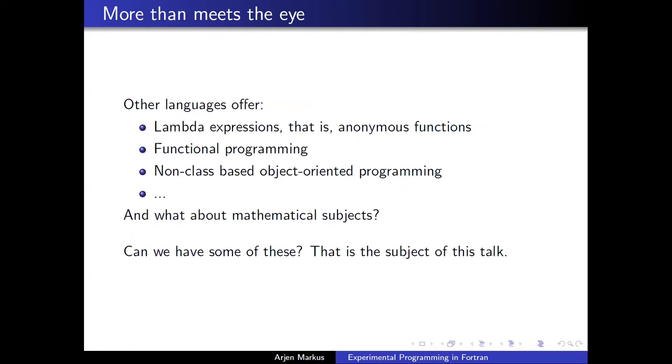And things I was thinking about are the ones shown here. Things that other languages offer, like lambda expressions. Basically, those are anonymous functions that are defined by the expression you have in your program, rather than a formally defined function somewhere in the program code. Functional programming is another type of programming paradigm that might be interesting to look into. Non-class-based object-oriented programming.